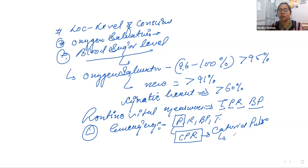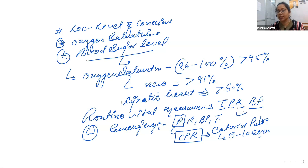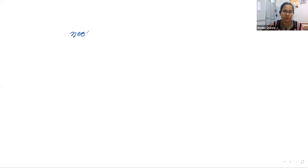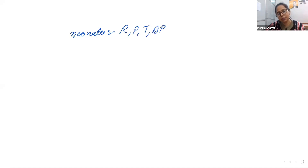In an emergency, we measure the carotid pulse for only 5 to 10 seconds — we don't wait for a full minute. The emergency sequence is: pulse, then respiration, then blood pressure, and last is temperature. In the case of neonates, we give first preference to respiration, then pulse, then temperature, and last is blood pressure.